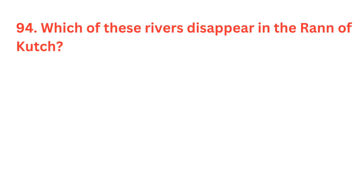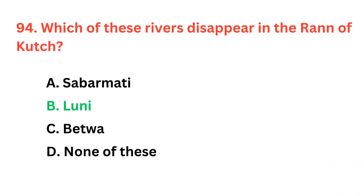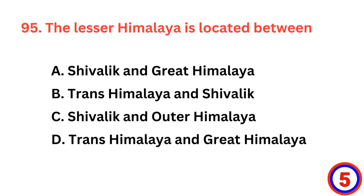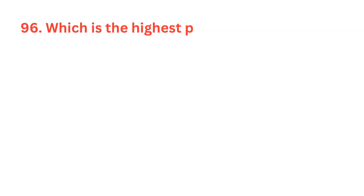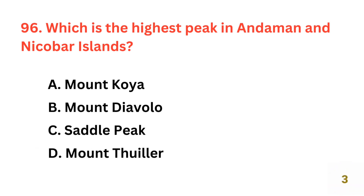Which of these rivers disappears in the Rann of Kutch? The correct answer is option B, River Luni. The lesser Himalaya is located between? The correct answer is option A, Siwalik and Great Himalaya. Which is the highest peak in Andaman and Nicobar Islands? The correct answer is option C, Saddle Peak.